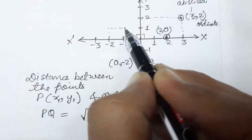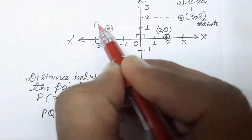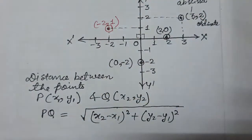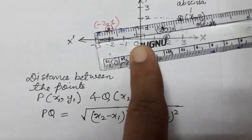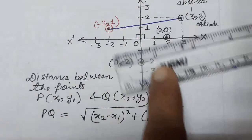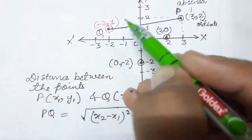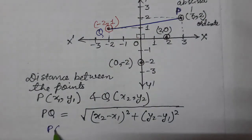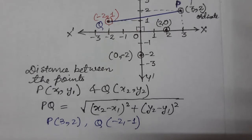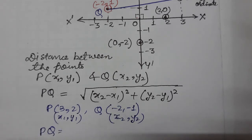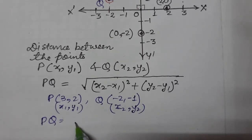Suppose we take a point: x is minus 2, y is 1, so the point is (−2, 1). We need to find the distance between (−2, 1) and (3, 2). We join these two points and find the distance. Let us call this point P — so P is (3, 2) and Q is (−2, 1). Here x1 = 3, y1 = 2 is the first coordinate, and x2 = −2, y2 = 1 is the second coordinate.